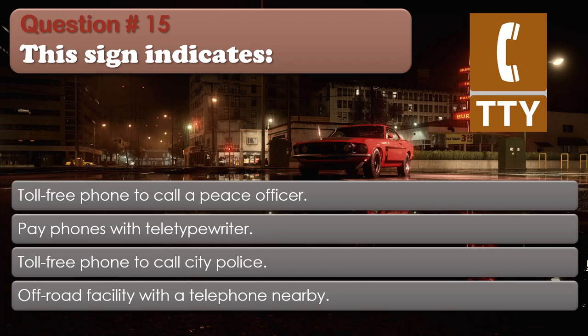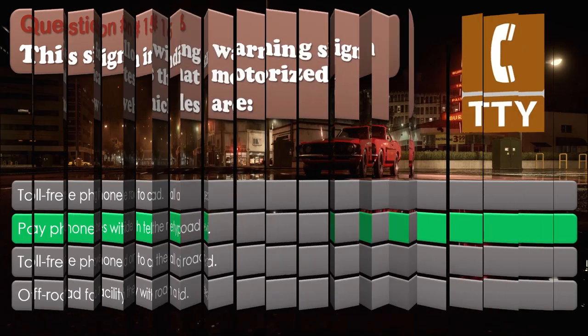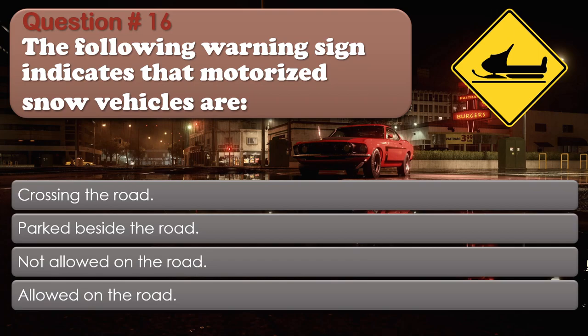Question number 15. The correct answer is: Pay phones with teletype rider. Question number 16. The following warning sign indicates that motorized snow vehicles are: Crossing the road. Parked beside the road. Not allowed on the road. Allowed on the road. The correct answer is: Crossing the road.